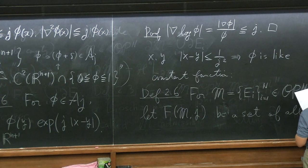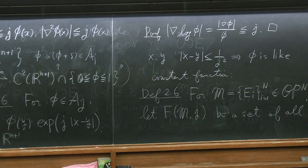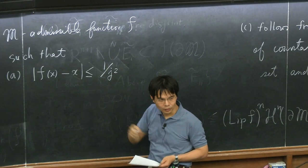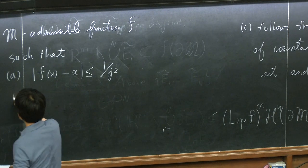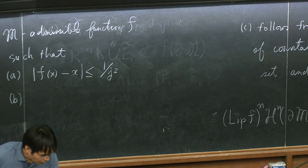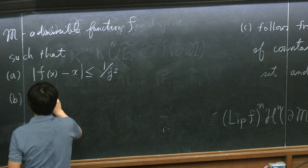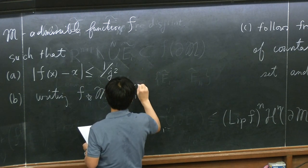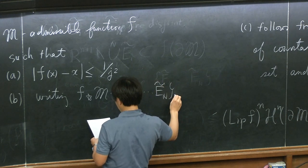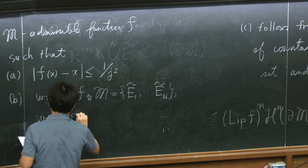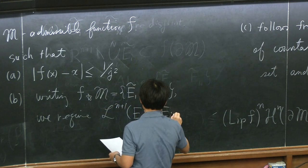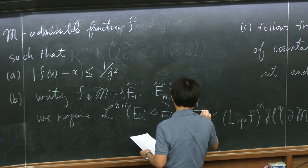Property A: F does not move much — the deformation is at most 1/j² in displacement. Property B: the volume change of each element is small, say at most 1/j. These ensure F does only a little bit of change.